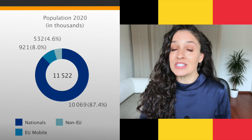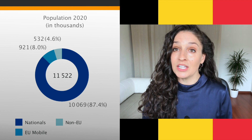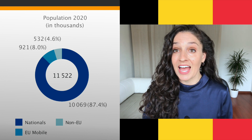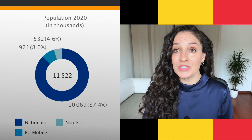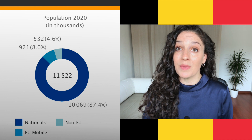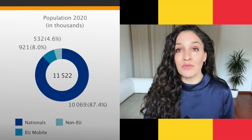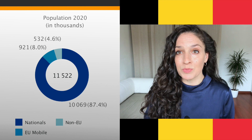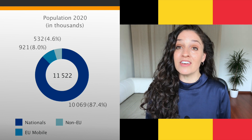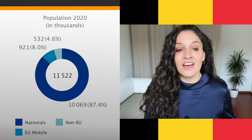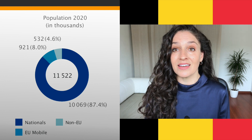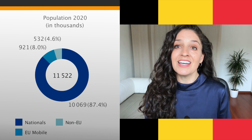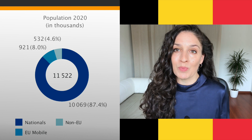If we look here, you can see that Belgium's population is around 11 and a half million people. Of those 11 and a half million, eight percent is made up of European immigrants and around 4.6 percent are non-European immigrants — immigrants from outside of the EU. Together, that means Belgium's immigrant population is around 12.4 percent of the total population.